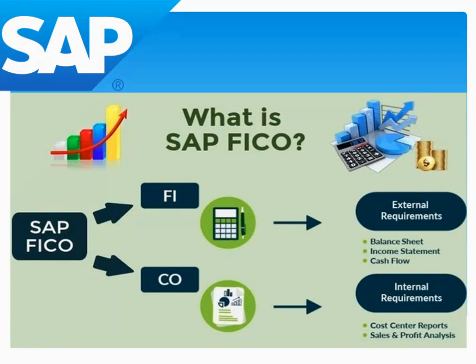Hello all. Today we are starting a session on what is SAP FICO. SAP FICO module is divided into two parts: FI and CO. FI is denoted as Financial Accounting and CO is denoted as Controlling.